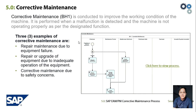Let's focus first on corrective maintenance. As per RapidSAP.com, corrective maintenance is conducted to improve the working condition of the machine. It is performed when a malfunction is detected and the machine is not operating properly as per its designated function.